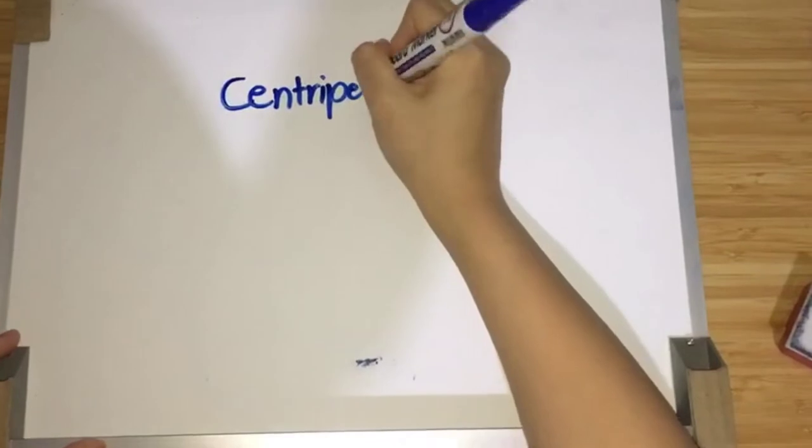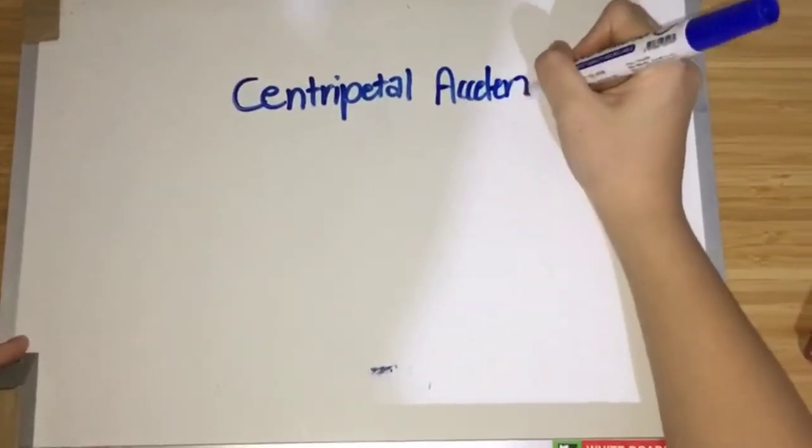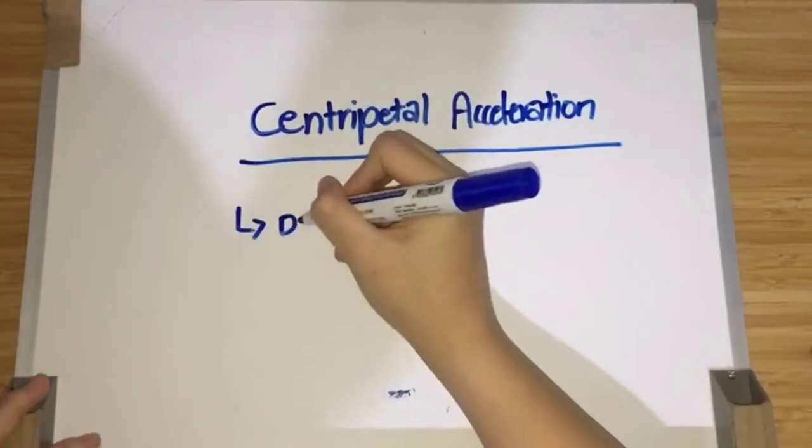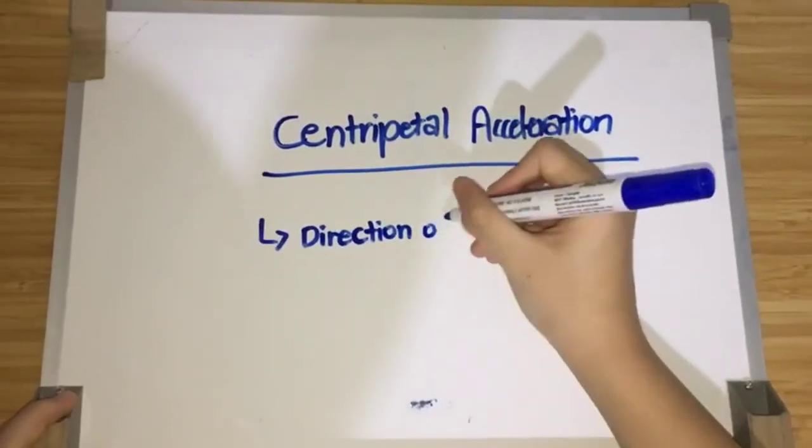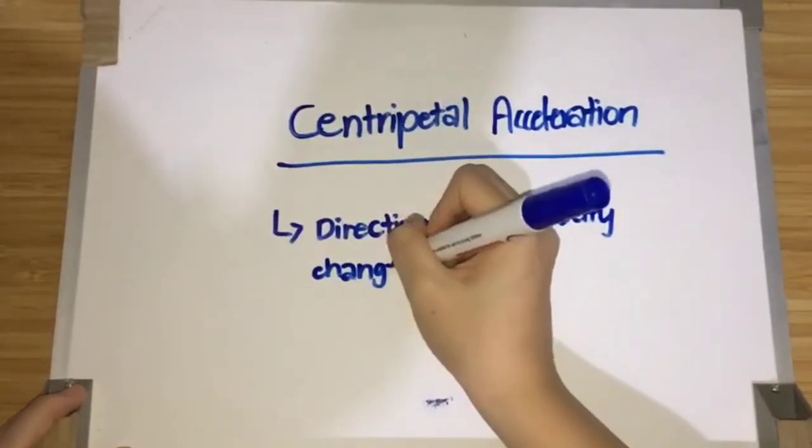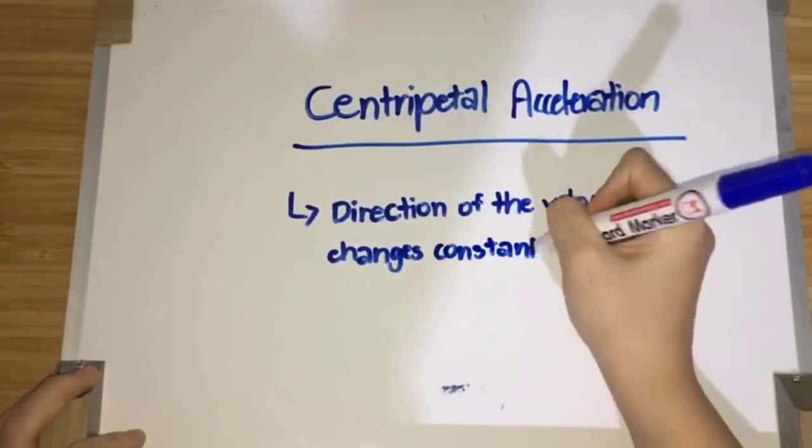Additionally, an object moving in a circular path is constantly accelerating because its velocity is constantly changing direction. This acceleration is what we refer to as centripetal acceleration, because it points towards the center of the circle.